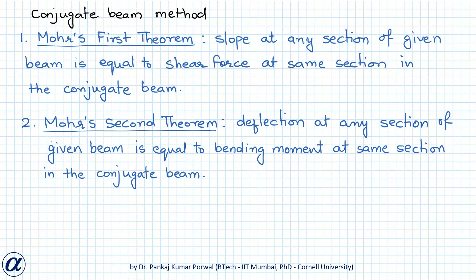Once we have done that, there are two theorems about the conjugate beam, also called Mohr's theorems, which give us results for slope and displacement at a particular point in the original beam. Mohr's first theorem states that the slope at any section of the given beam equals the shear force at the same section in the conjugate beam. Mohr's second theorem states that the deflection at any section of the given beam equals the bending moment at the same section in the conjugate beam.